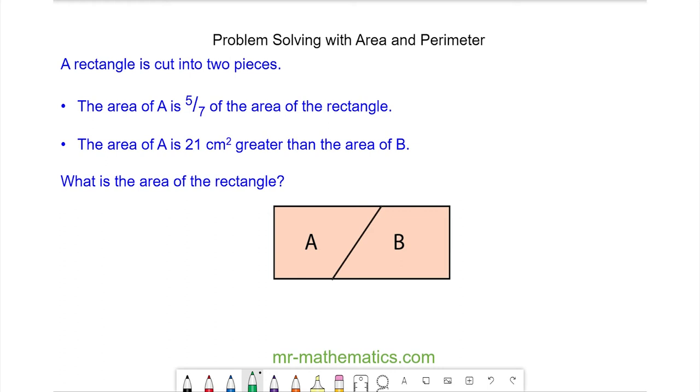In this question, we're told that a rectangle has been split into two pieces where the area of A is 5/7 of the rectangle, so the area of B must be 2/7 of the rectangle. The area of A is 21 centimeters squared greater than B.